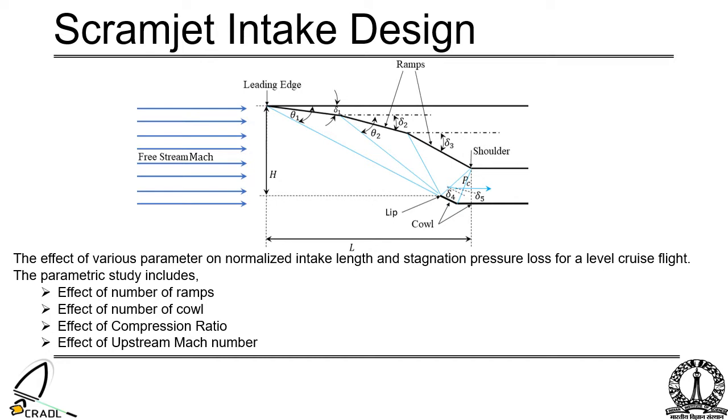The current study focuses on designing a two-dimensional scramjet inlet for n ramps and m cowls. The problem is formulated to minimize the total pressure loss across the series of shocks. In this study we report the effect of number of ramps, cowl, and the pressure compression ratio and the Mach number.